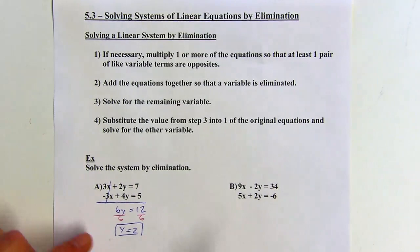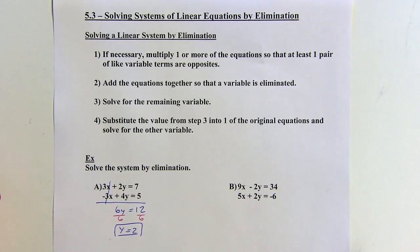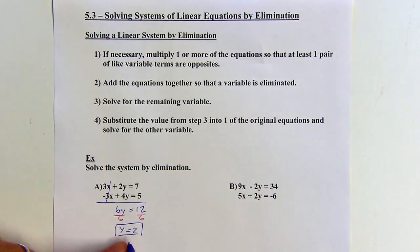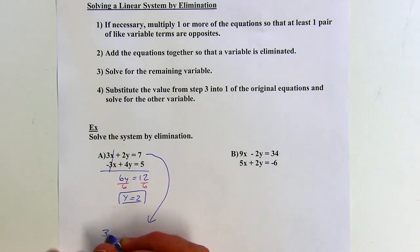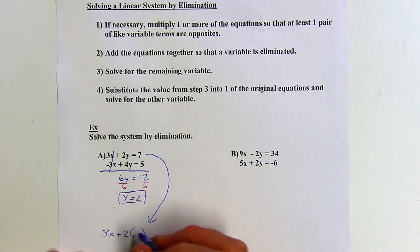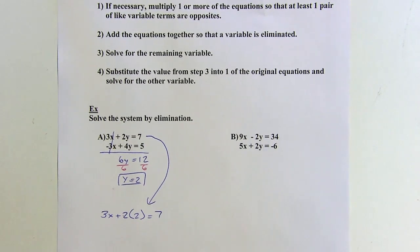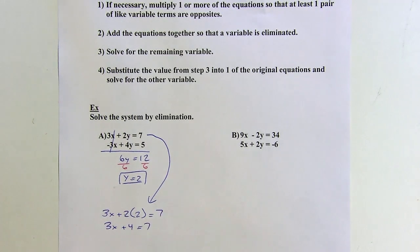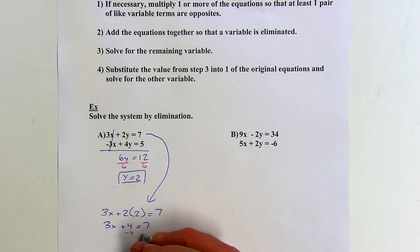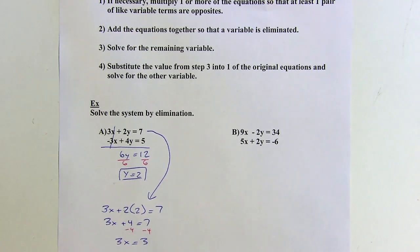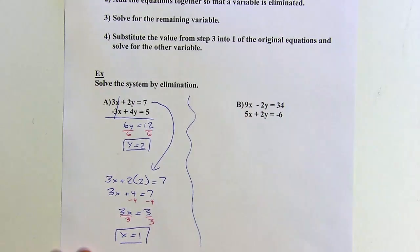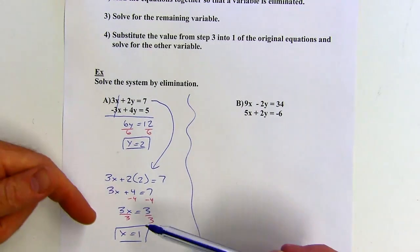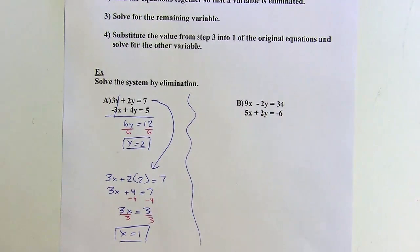Once you get one of the variables, you're going to solve the rest by substitution. I'll go back to one of the original equations — it doesn't matter which one — and plug in the y value to find x. Using the top equation: 3x plus 2y equals 7, and y is 2, so 3x plus 4 equals 7. Subtracting 4 from both sides gives 3x equals 3, then dividing by 3, x equals 1. There's my solution; you could write it as an ordered pair and test it in both equations.